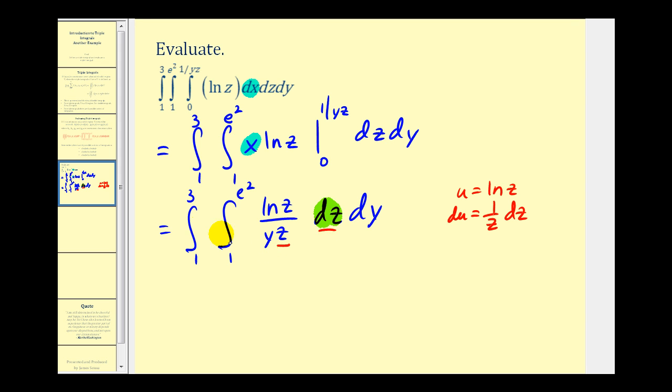So if we were to rewrite this in terms of u, one over z dz is equal to du, and then natural log z is just equal to u.